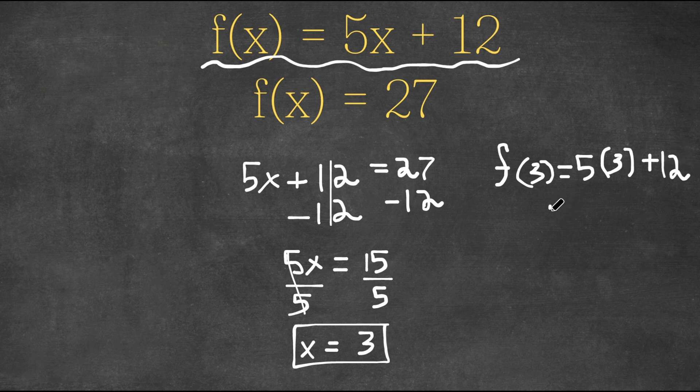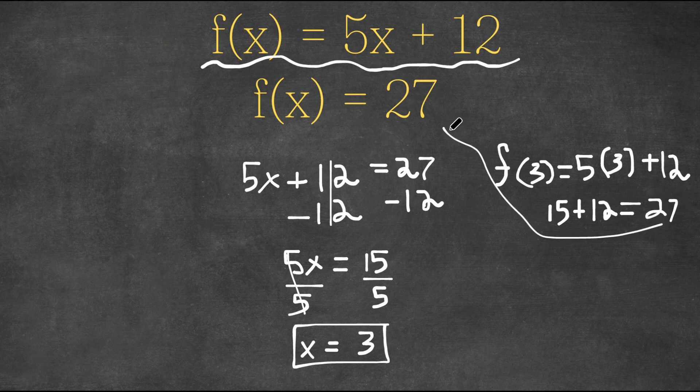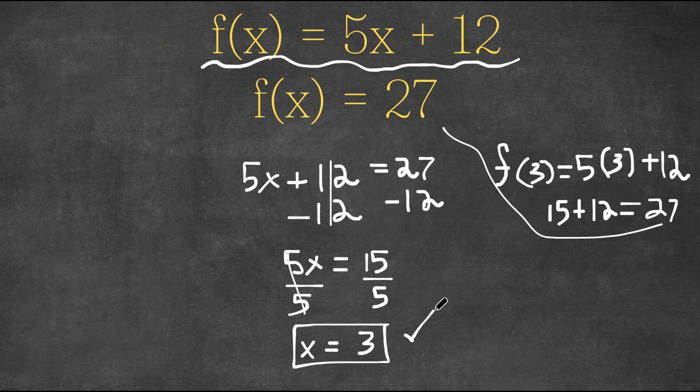5 times 3 is 15, plus 12 equals 27. As you can see, both of these match up, so x = 3 is correct.